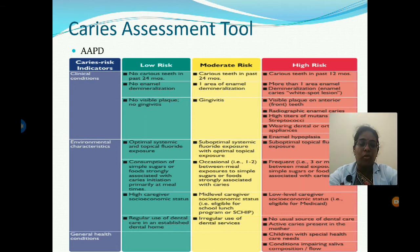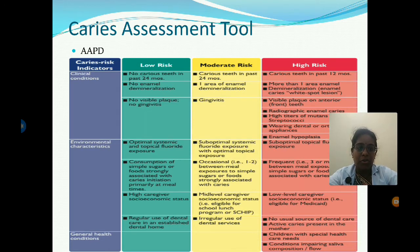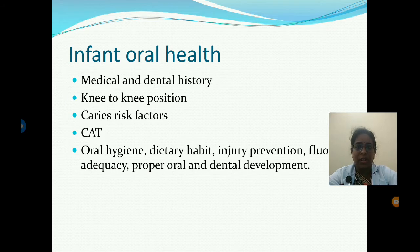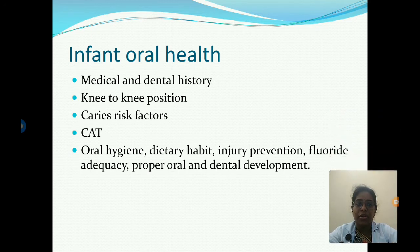General health conditions are not applicable to low or moderate risk patients — they apply only to high risk caries patients. This includes children with special health care needs and conditions with impaired salivary composition or decreased salivary flow rate. Infant oral health can be detected through proper medical and dental history, examining the patient in the knee-to-knee position, and identifying caries risk factors using the AAPD Caries Assessment Tool, along with oral hygiene, dietary habits, injury prevention, fluoride adequacy, and oral and dental development.